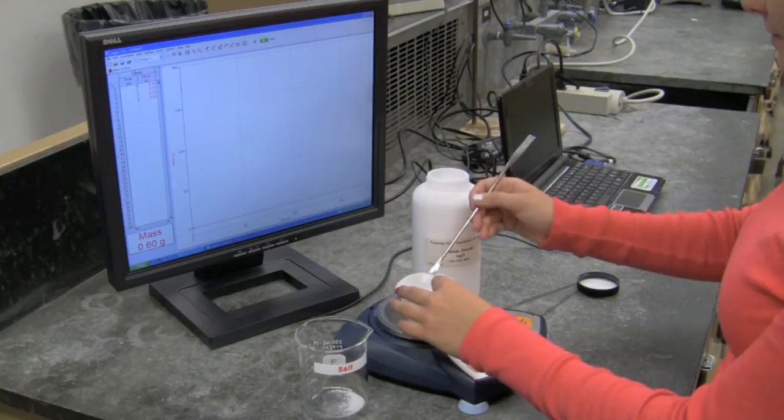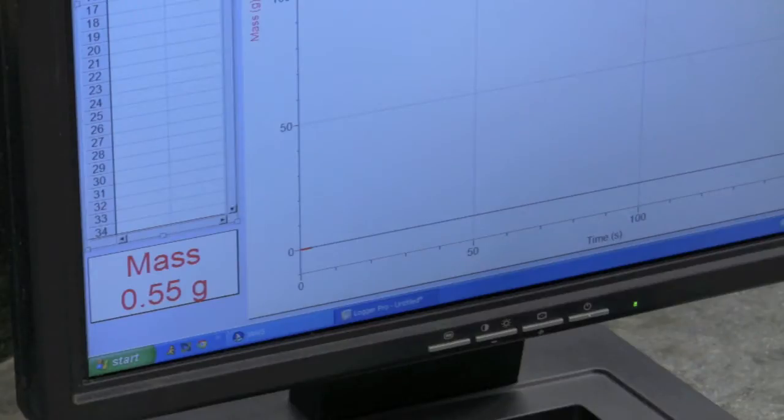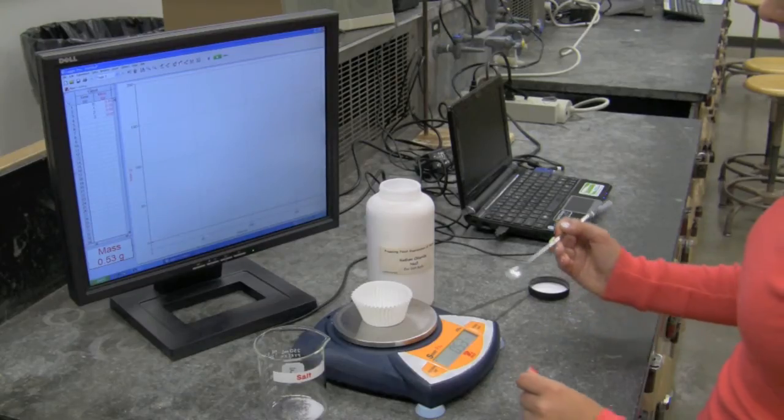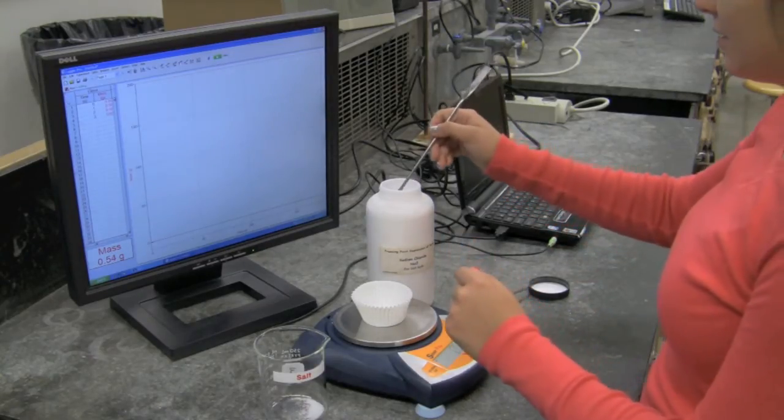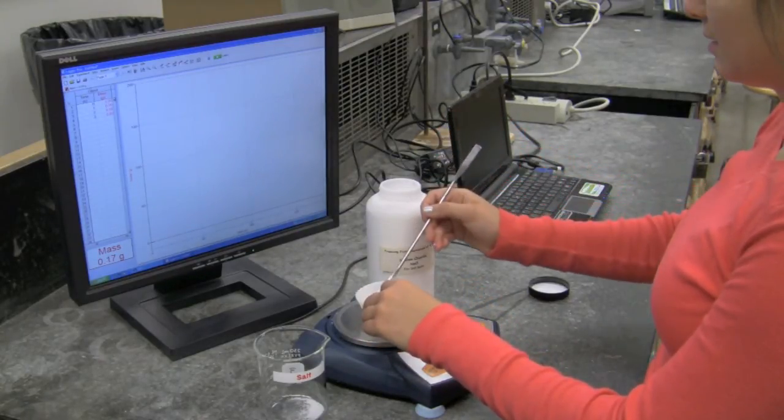The student is scooping white salt from a large container to her right. 0.36, 0.55, 0.54. She's pouring the scoop of salt into a weighing boat on a balance in front of her.